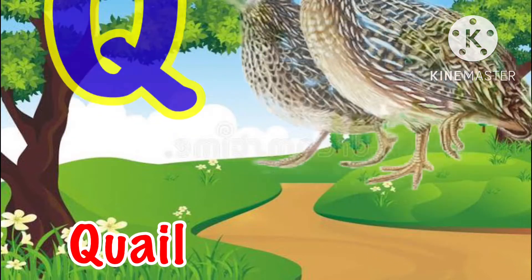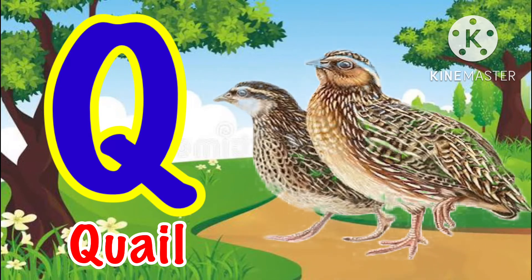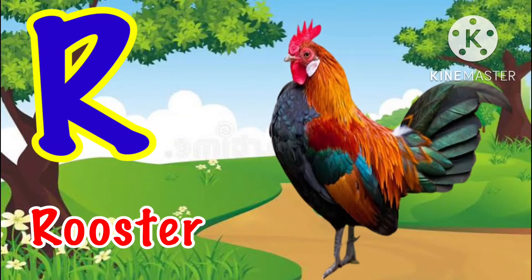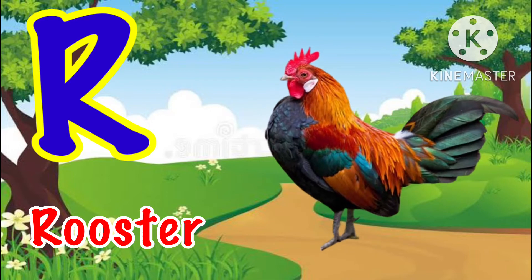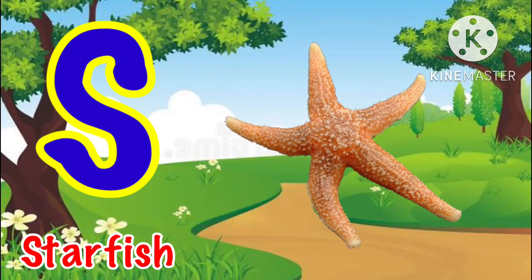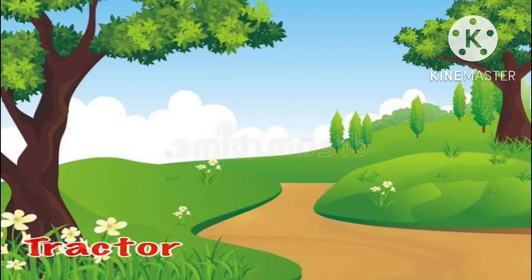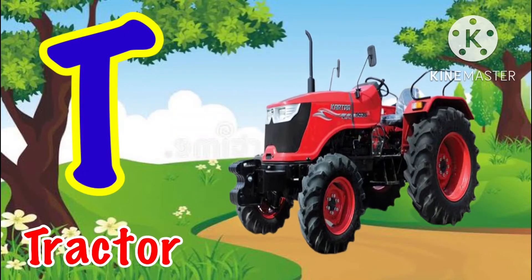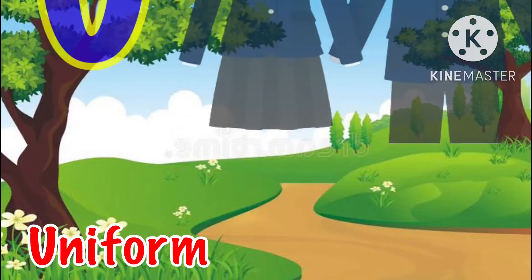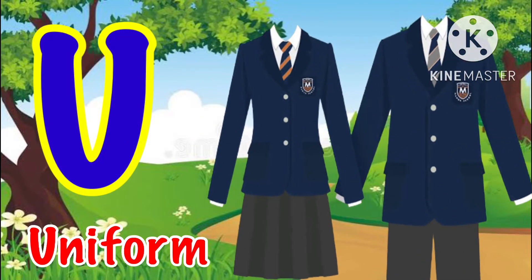Q for quail, R for roaster, S for starfish, T for tractor, U for uniform.